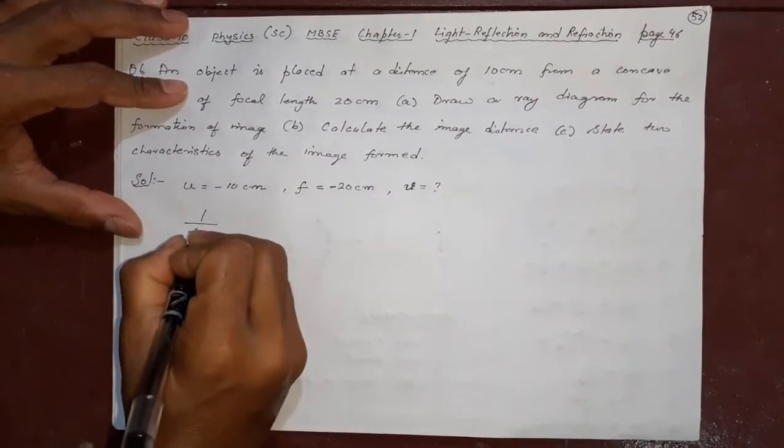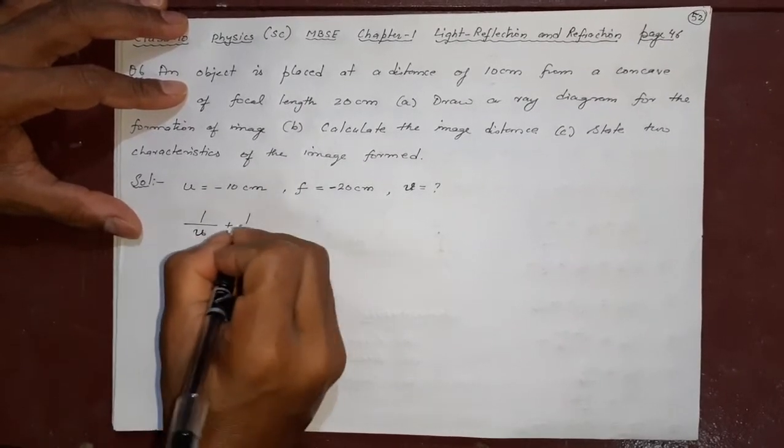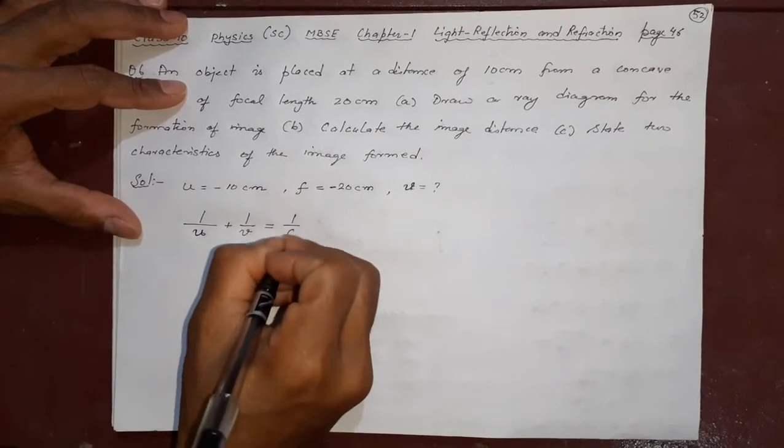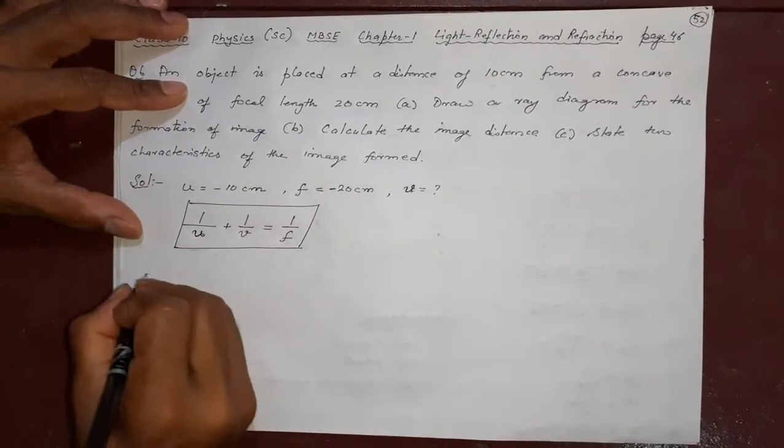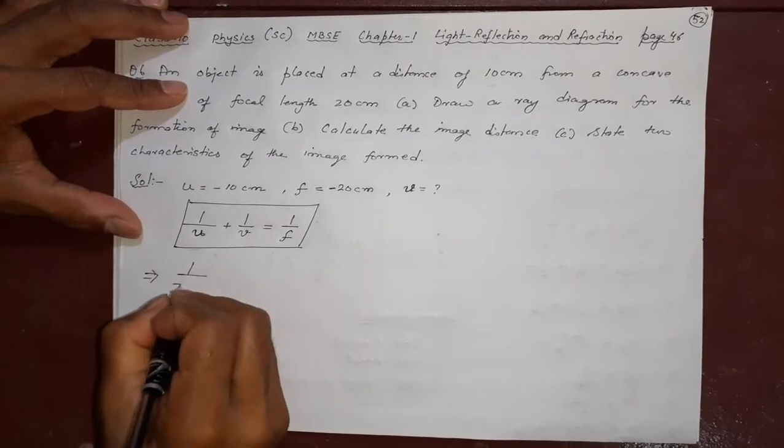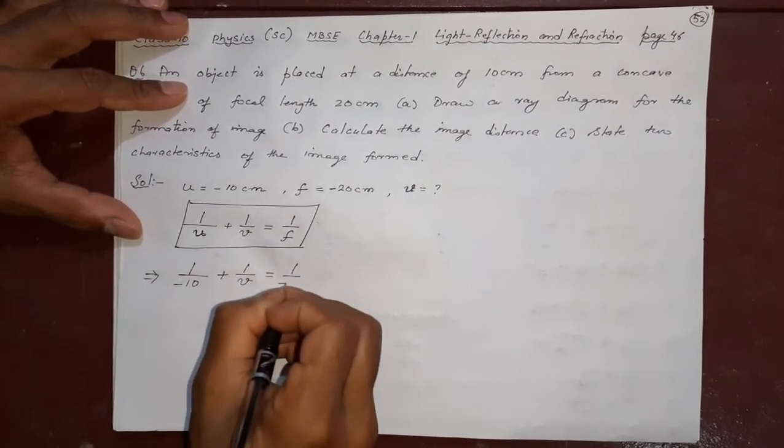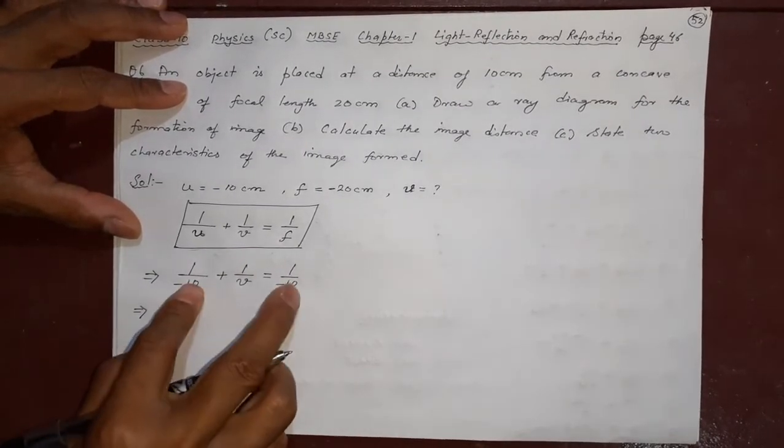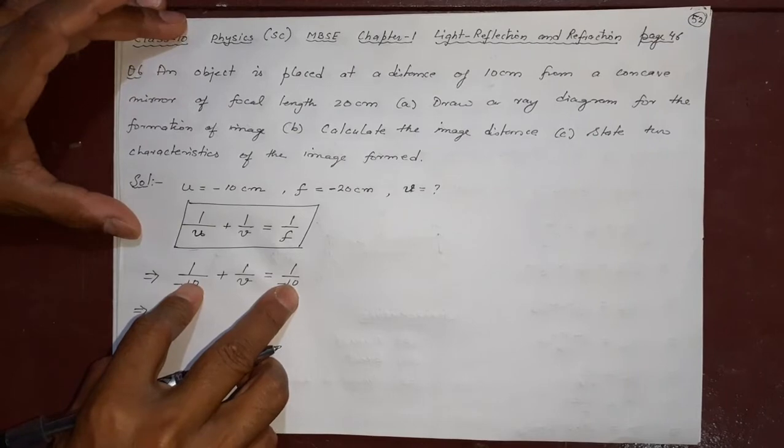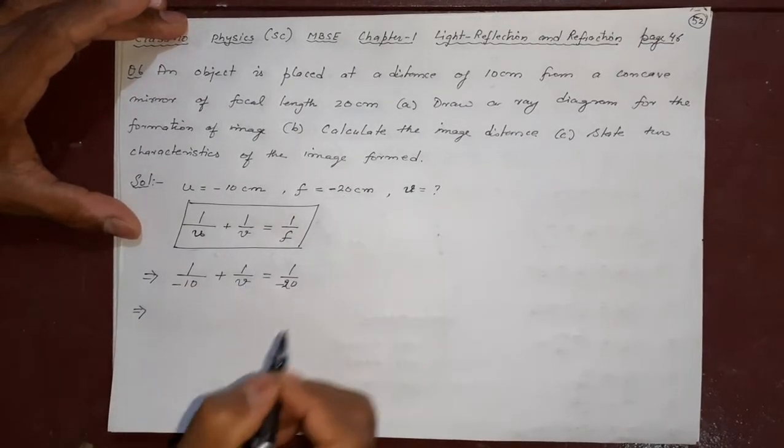1 by f equal to 1 by u plus 1 by v. It is kept like this. Right. What is this? 1 by minus 10 plus 1 by v equal to 1 by minus 20. Now, you can see. You can directly cancel these two also. Let me, let us just wait. This will be minus 20 not 10. Right.